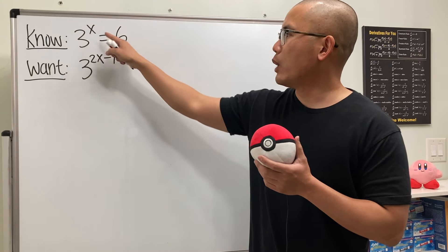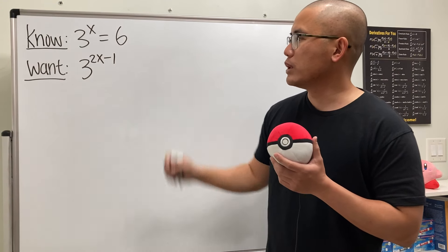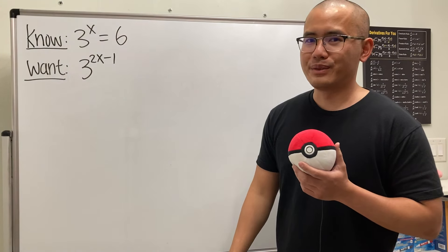We know that 3 to the x power is equal to 6, and we want to know 3 to the 2x minus 1's power. How can we solve this?